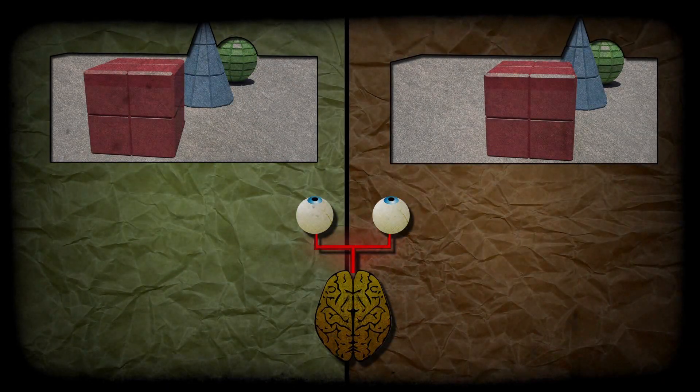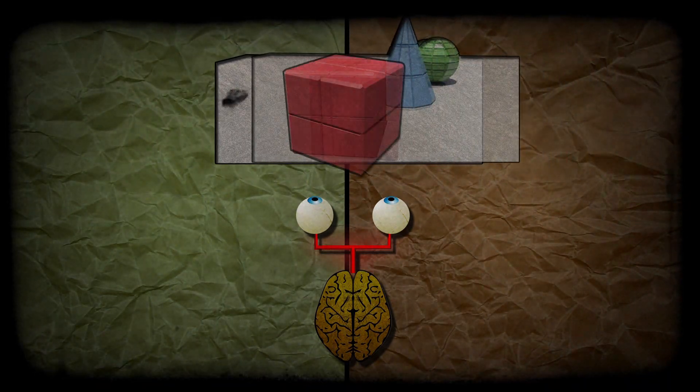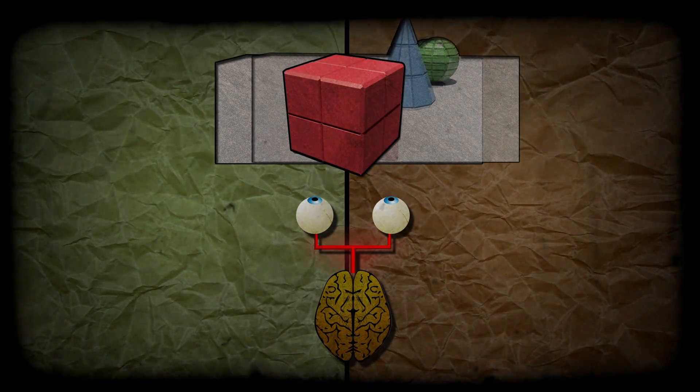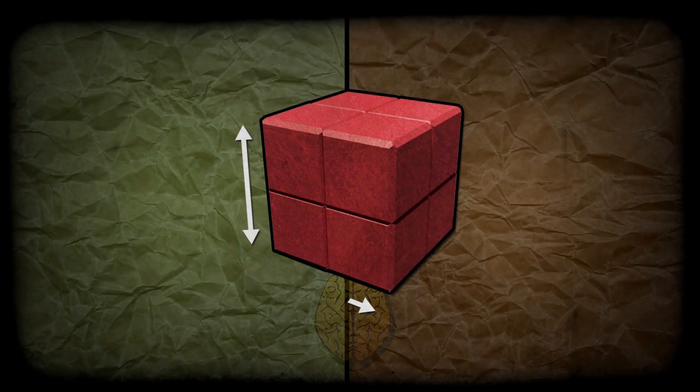The brain takes information from each eye and joins into a single image, interpreting the slight differences as depth. This produces a three-dimensional figure: height, width and depth.